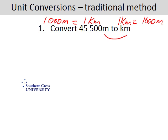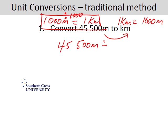Because in the question we're going from metres to kilometres, this is the conversion that we need. To go from metres to kilometres, 1,000 to 1 means that you would divide by 1,000. So 45,500 metres divided by 1,000 will give us how many kilometres. Dividing by 1,000 means we move the decimal point three places — one, two, three — so it becomes 45.5 kilometres.